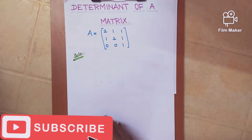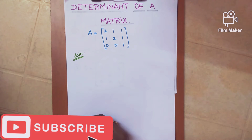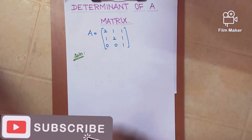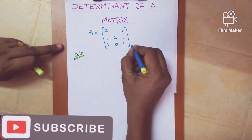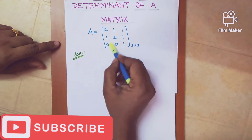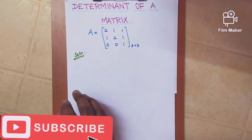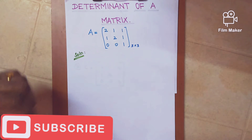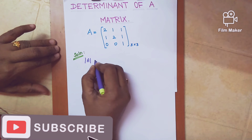I am going to teach you how to find the determinant of a matrix. Here I have taken a matrix A equal to [2,1,1; 1,2,1; 0,0,1], which is a 3 by 3 matrix — 3 rows and 3 columns. Now we are going to see how to find the determinant for this matrix. First, on the left hand side we write mod A.